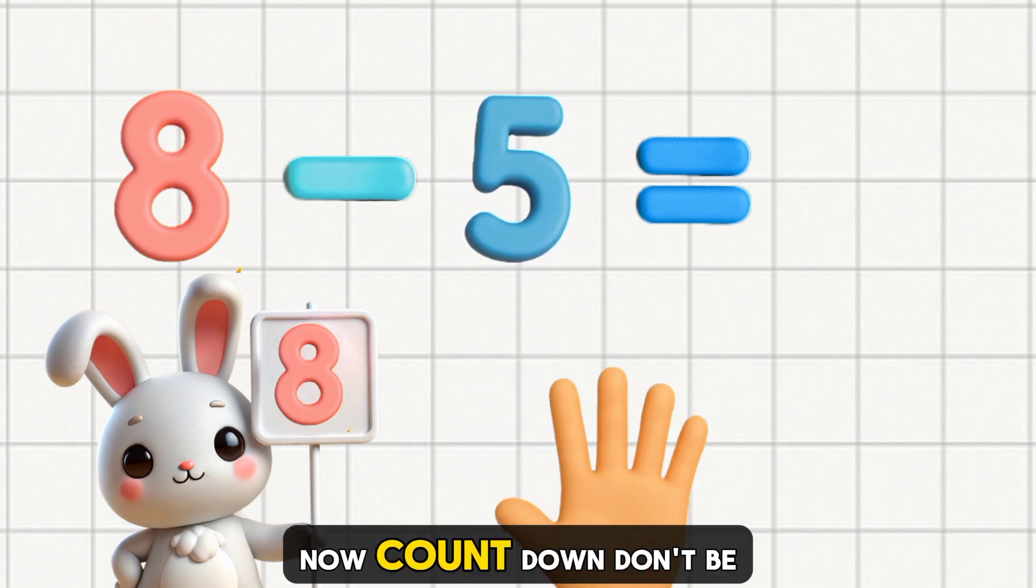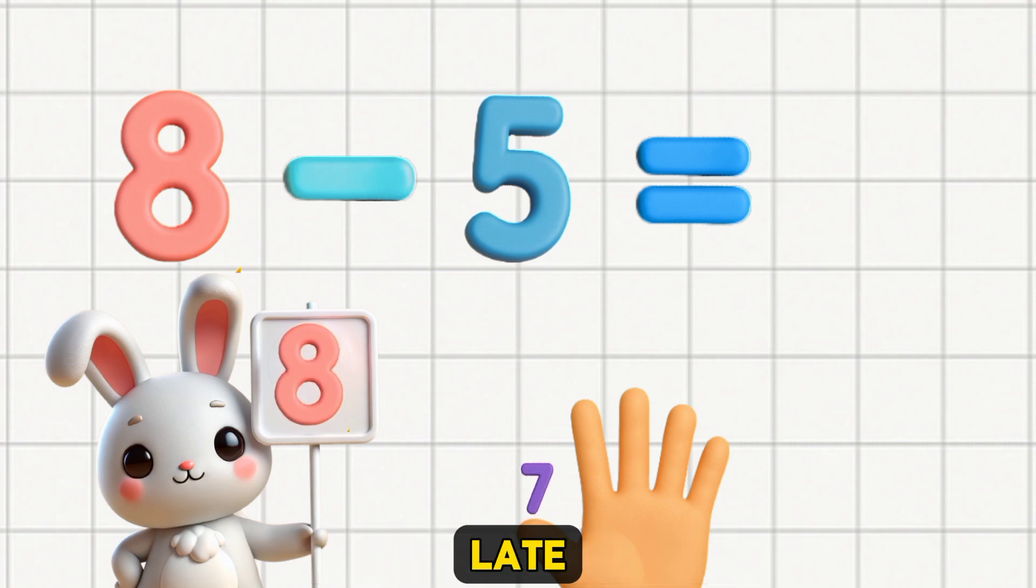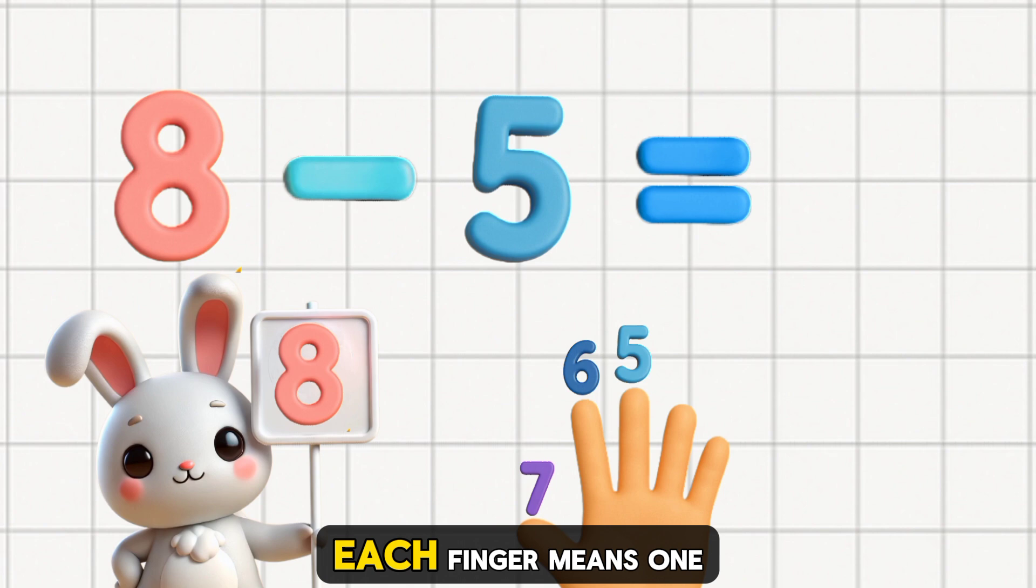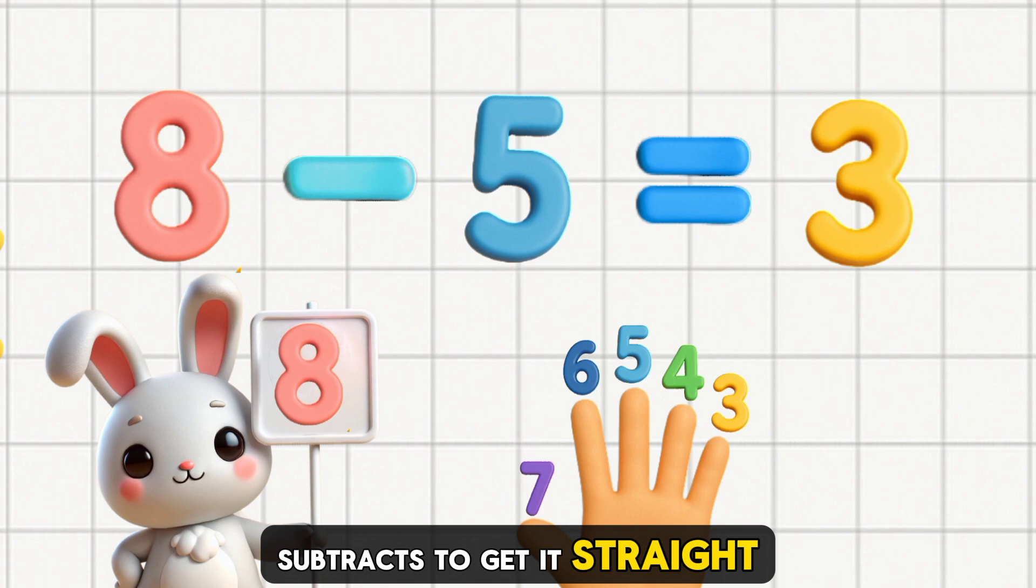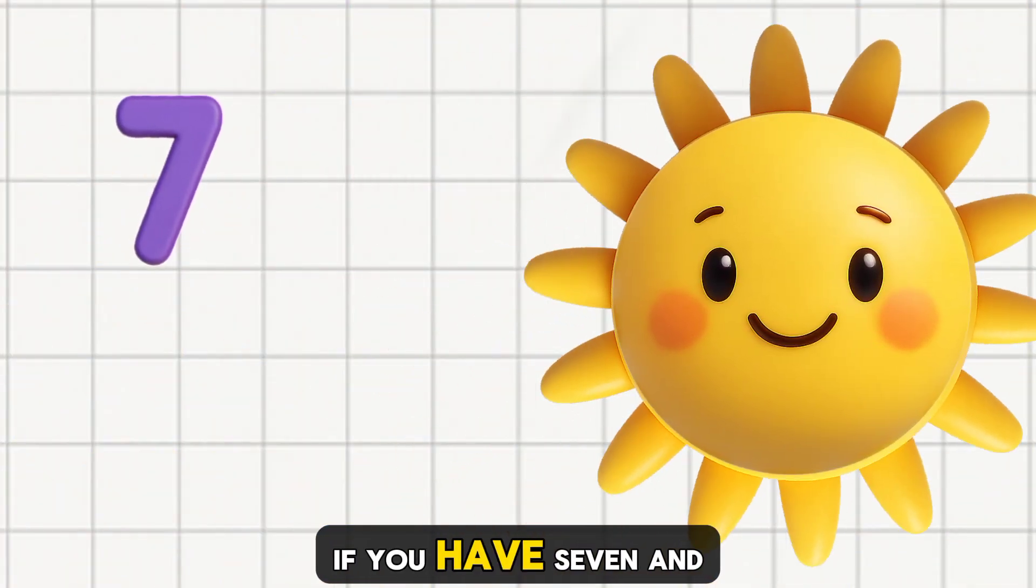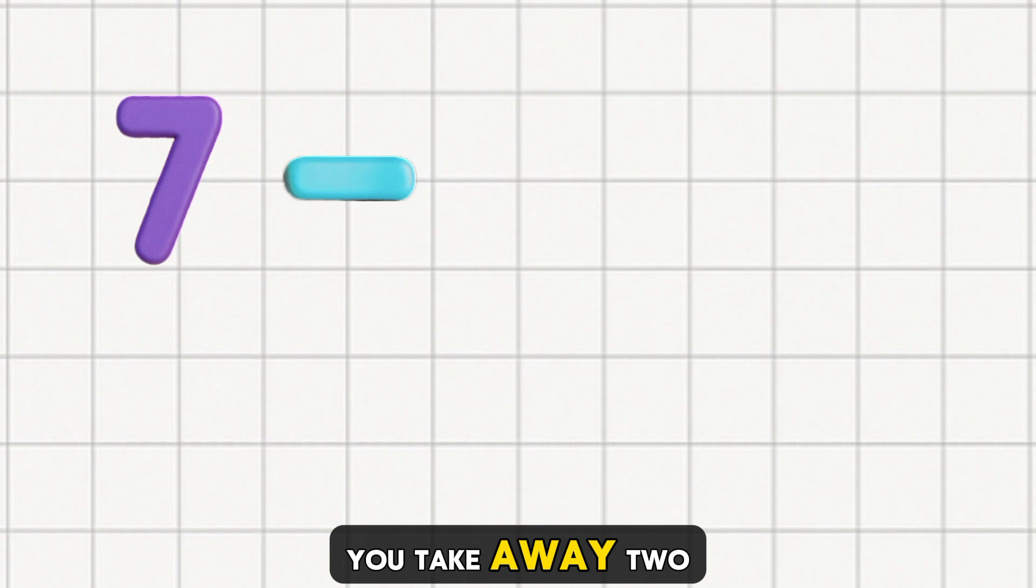Now calm down, don't be late. Each finger means one, subtract to get it straight. If you have seven and you take away two.